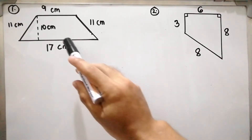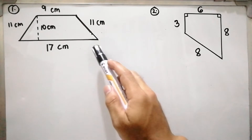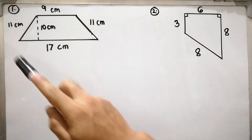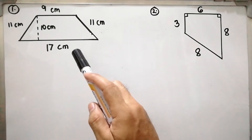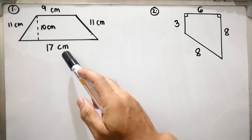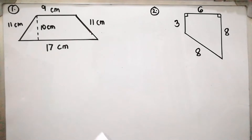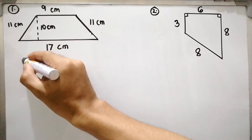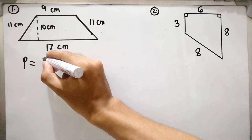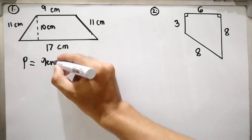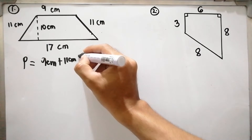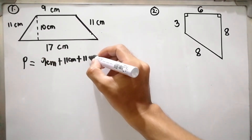Let us have example number one. Let us find the perimeter and area of this trapezoid. For the perimeter, we add up all the sides of the trapezoid. The sides are 11 cm, 9 cm, 11 cm, and 17 centimeters. So P is equal to 9 cm plus 11 cm...